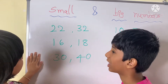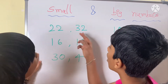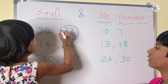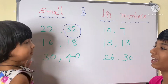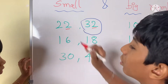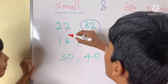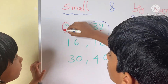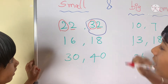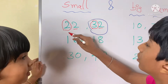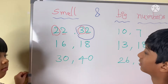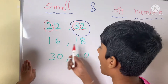Which number is big — 22 or 32? Thirty-two. Why? Because in the ones column, 2 and 2 are common. But in the tens column, 2 and 3 are different. So 2 is small and 3 is big, so 32 is big.